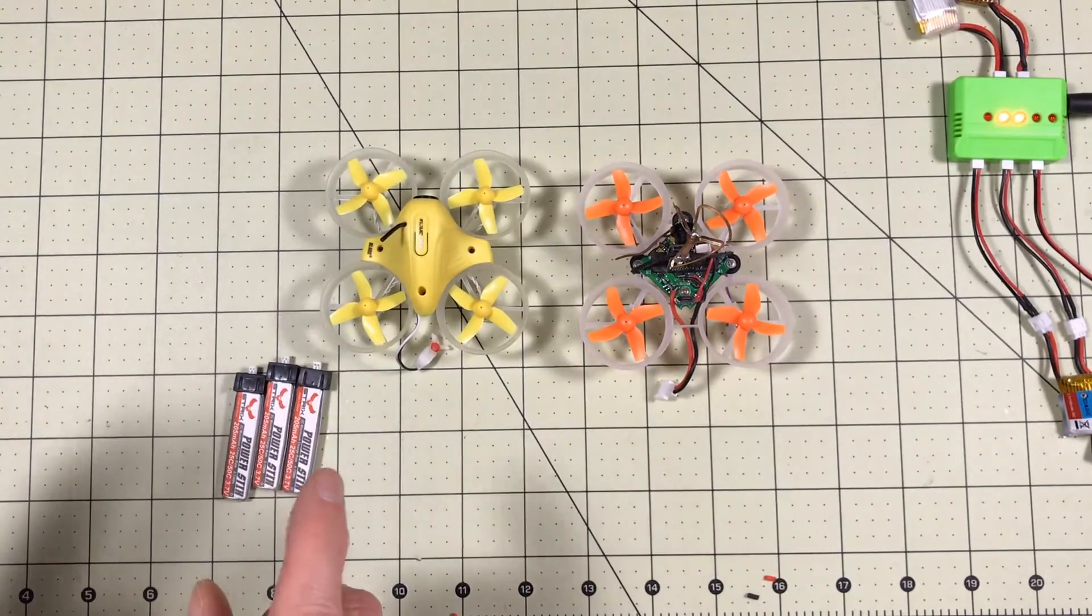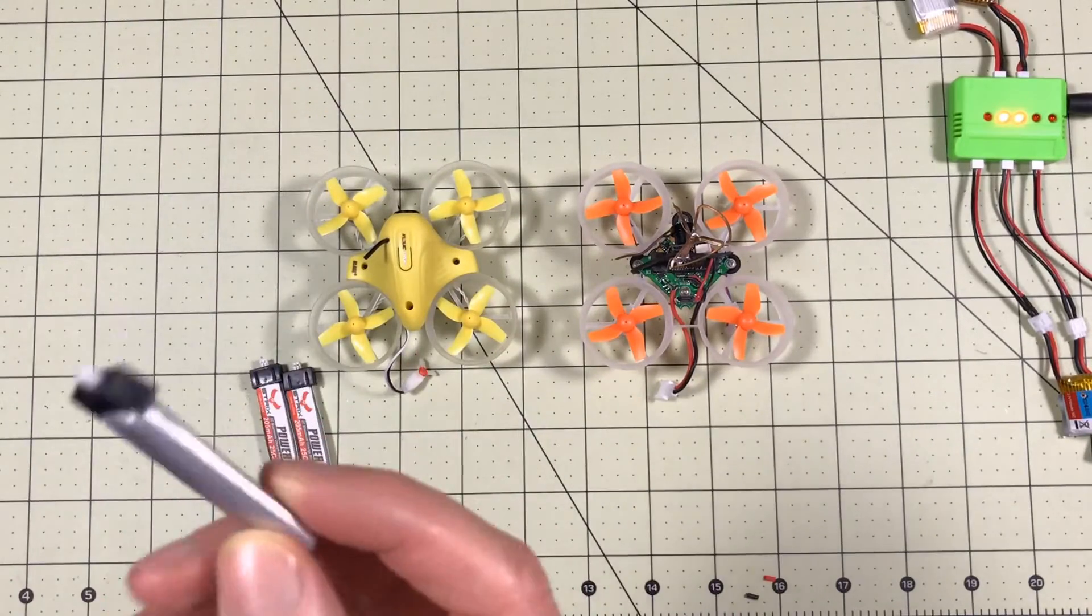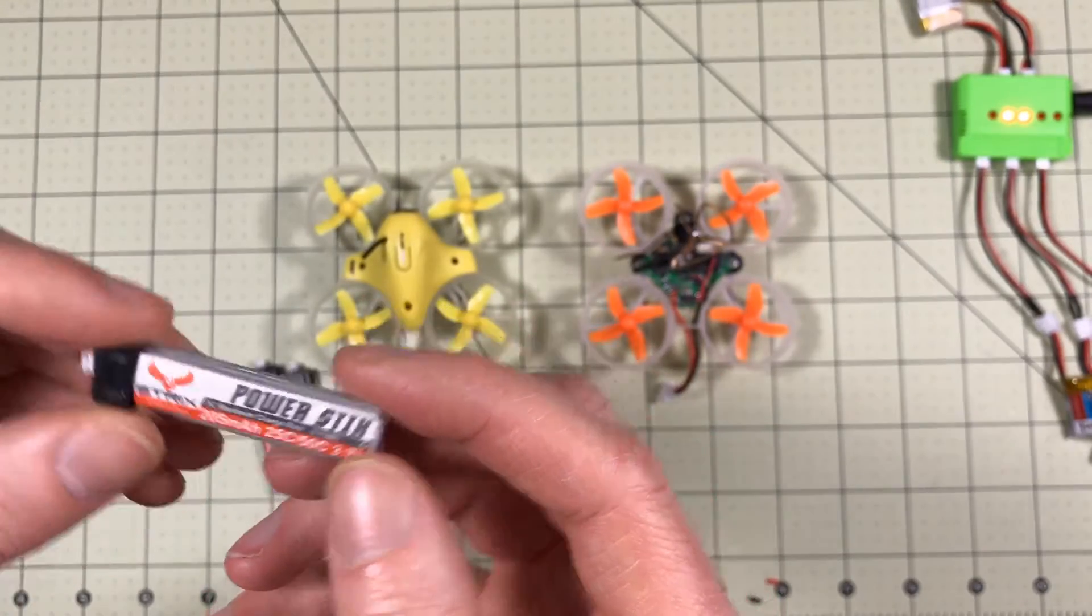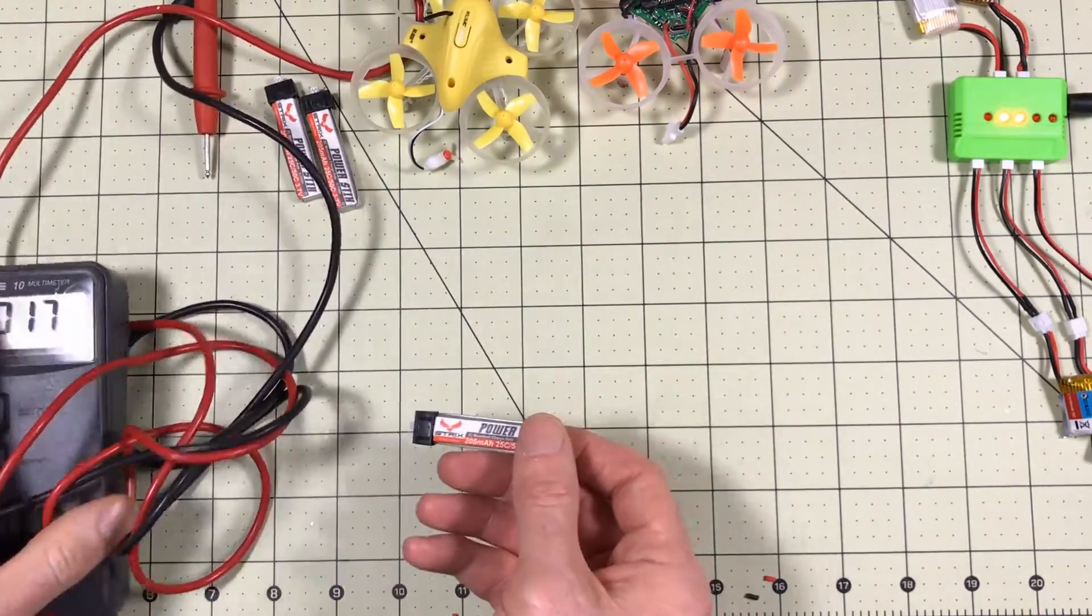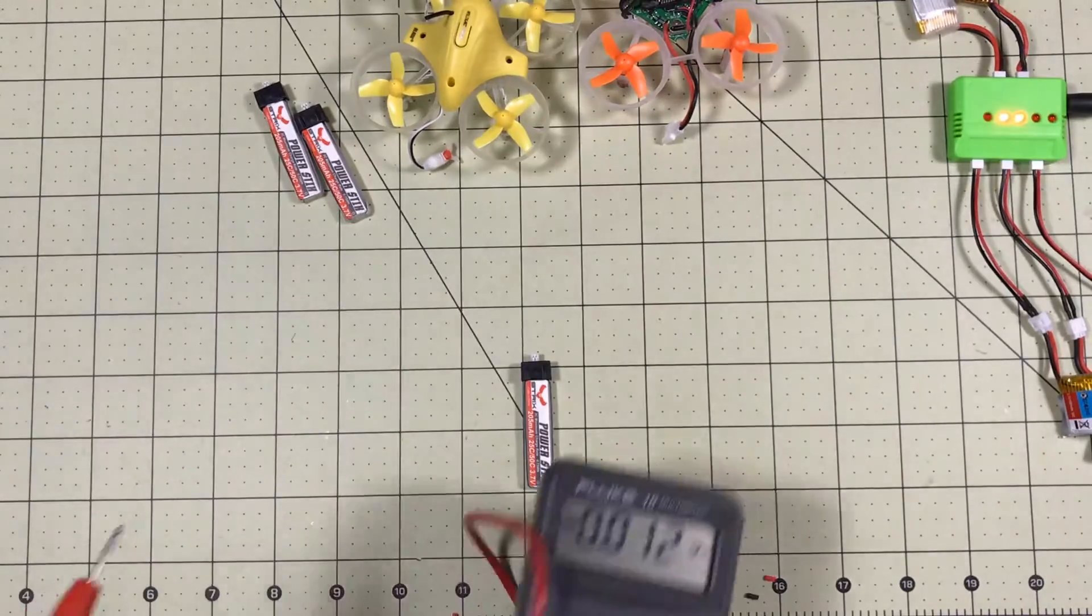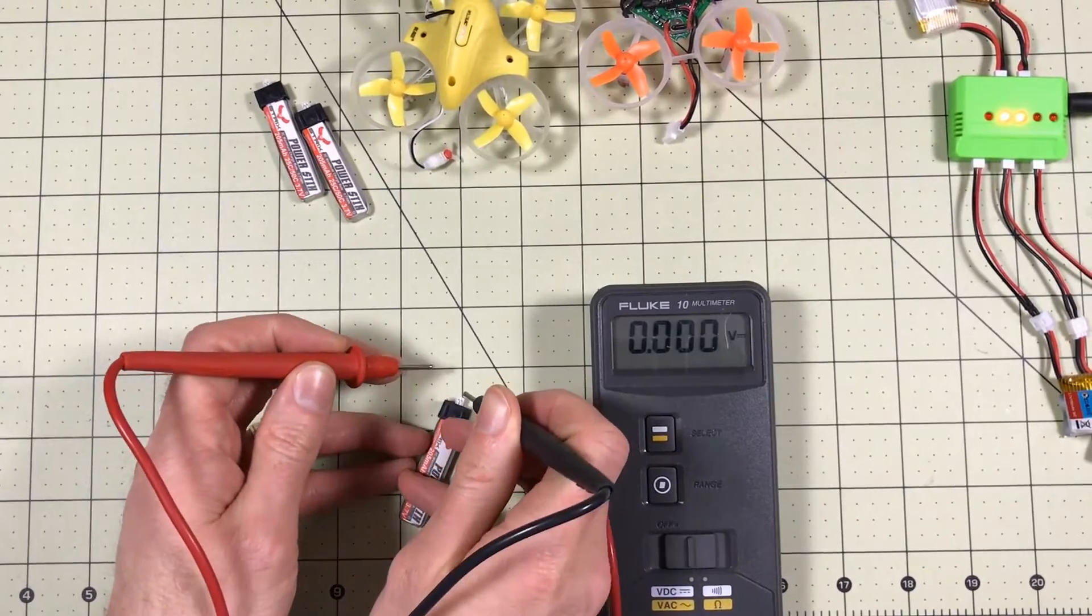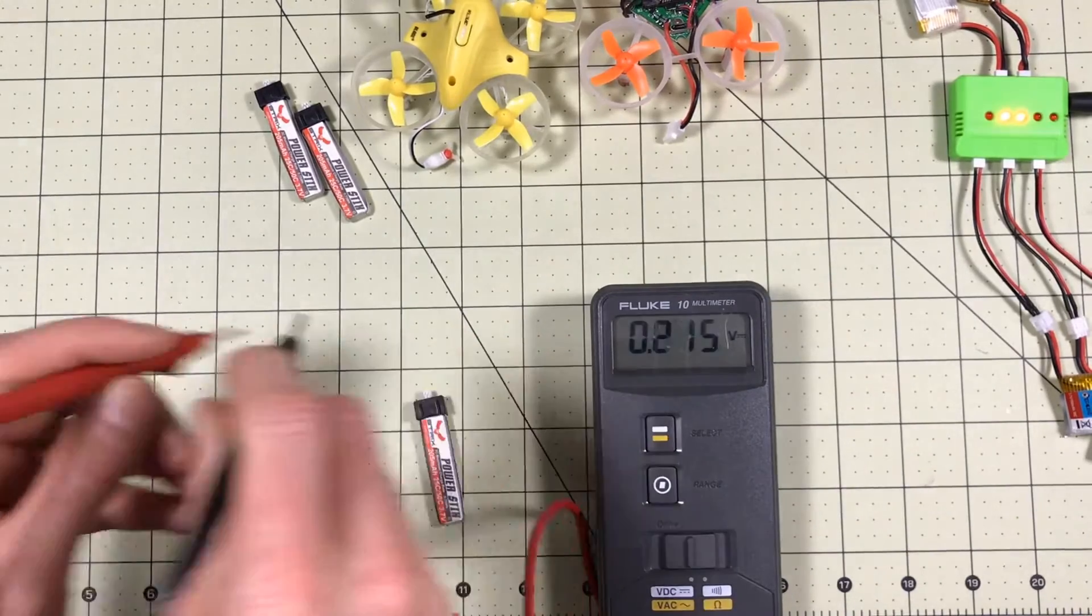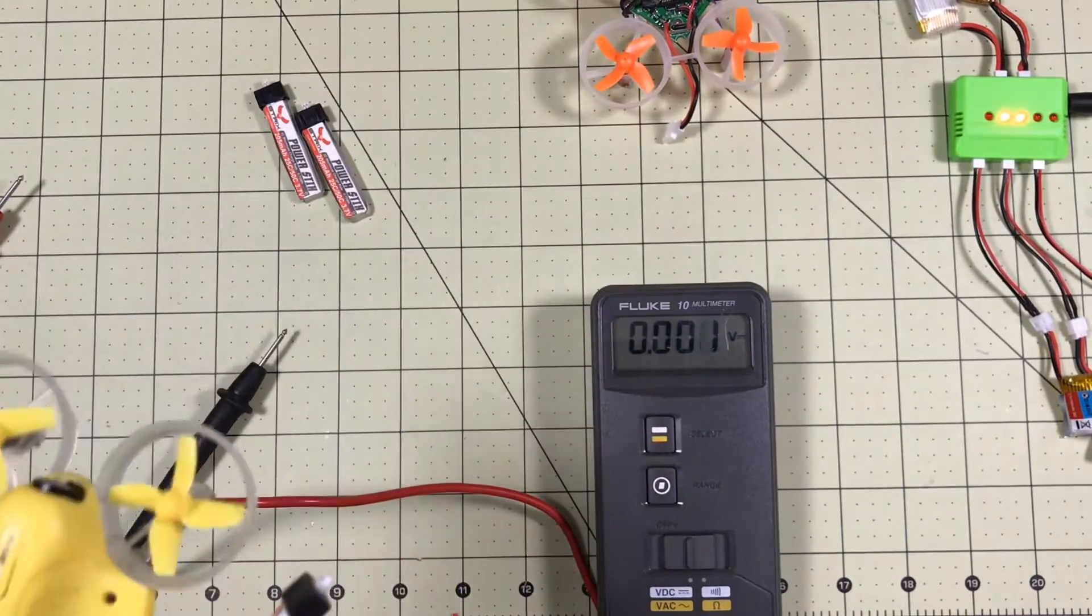So what we're going to do first is the straight flight of the Inductrix FPV with one of the Inductrix FPV batteries. Now here's a third-party Strix battery, it's a 25/50C. So it's comparable. What we're going to do first is check the voltage, we're going to fly it, and then we're going to check the voltage again. So I believe I've got these charged right to 4.2 volts. So 4.21 volts. So we're going to go fly this and see how long it flies.